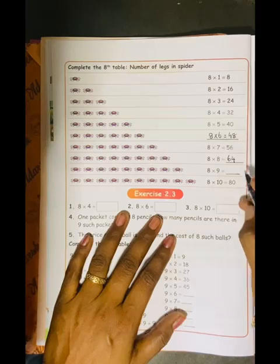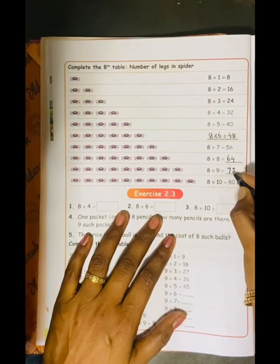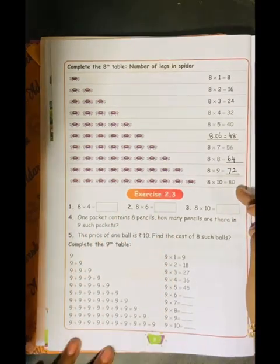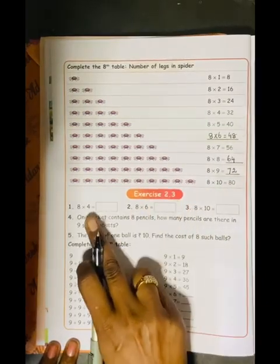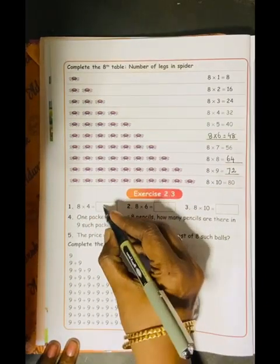Then, 8 times 9 is 72. 8 times 10 is 80. See, Exercise 2.3. 8 times 4 is, what is 8 times 4? 32.